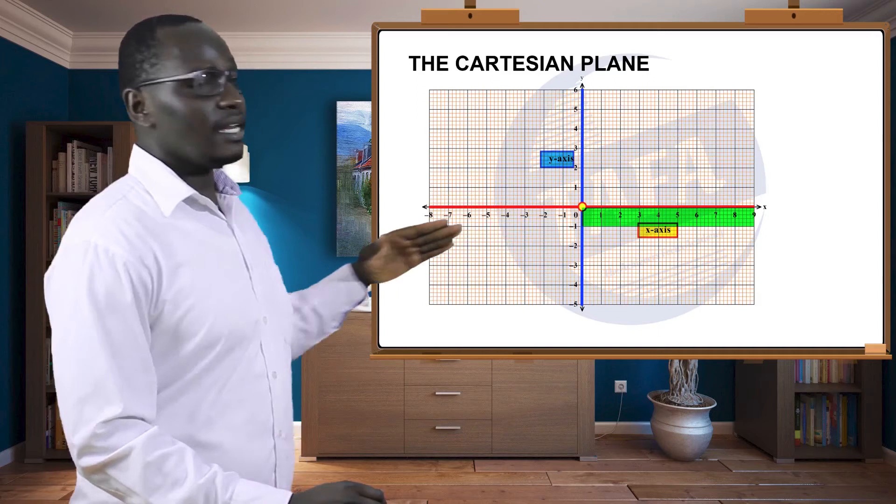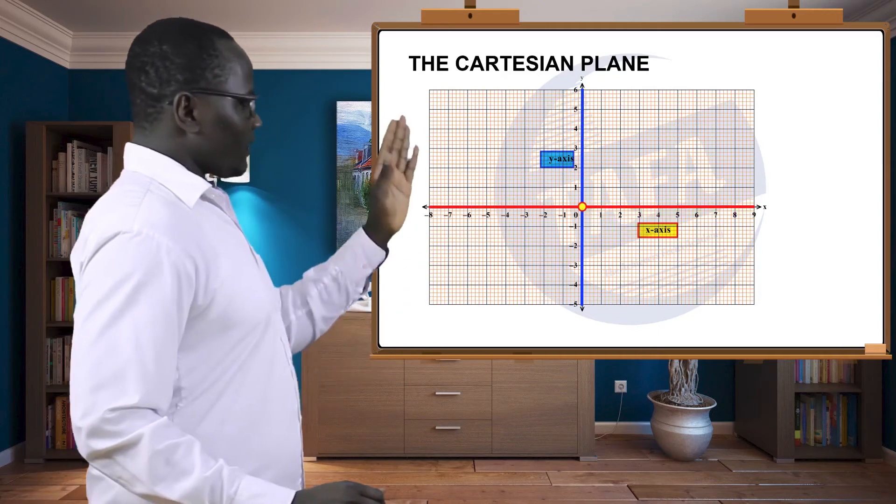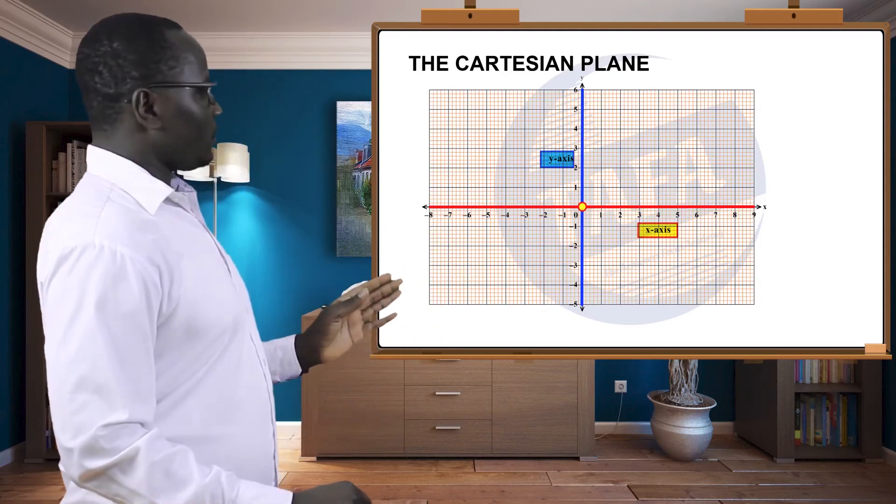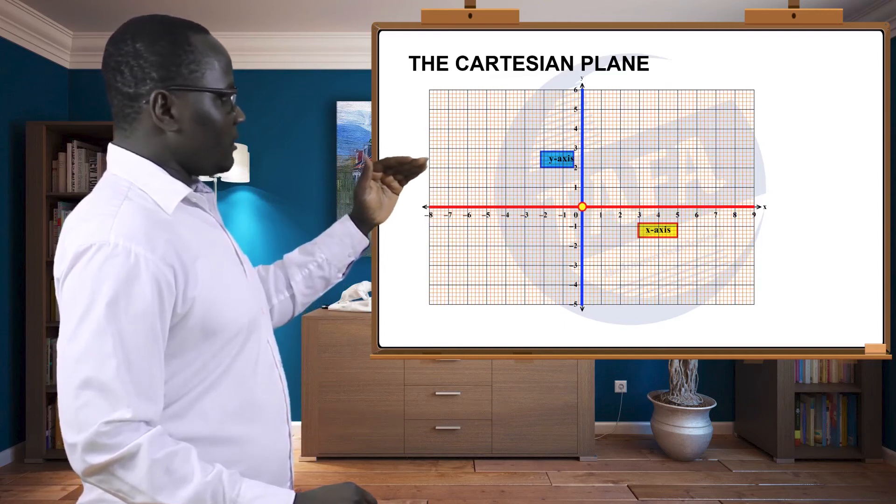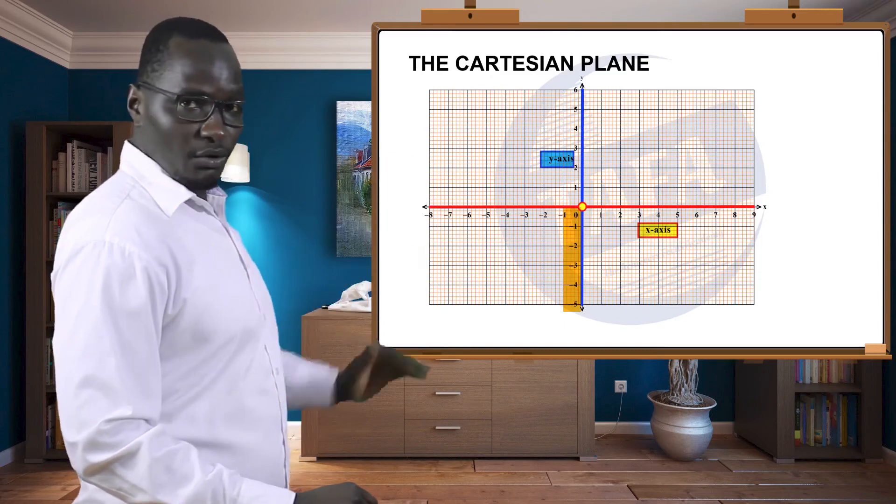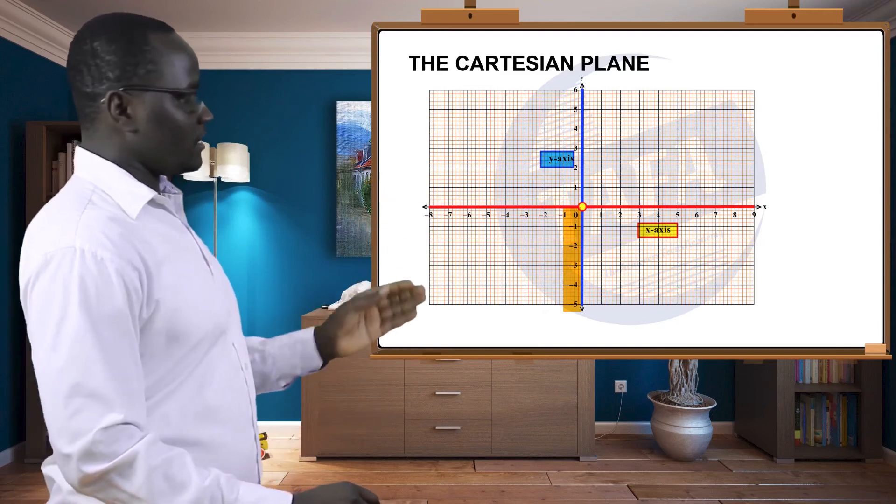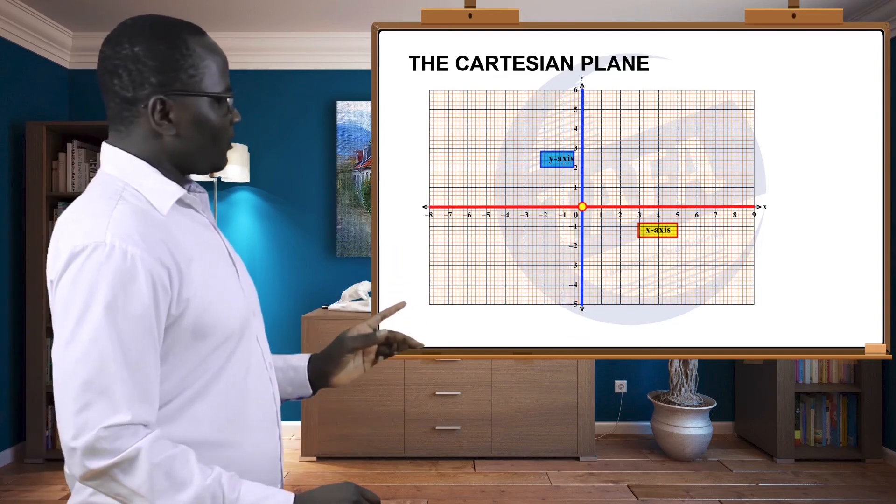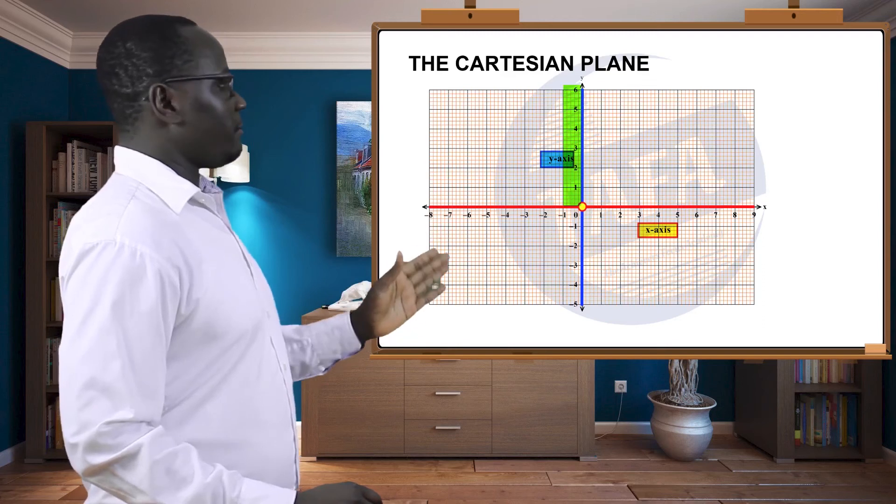The vertical line is the y-axis. Now the y-axis also, you can see points below zero, below O, are negative and they are becoming smaller and smaller, that is from negative one, negative two, and so on. Then also going up, the numbers are positive and they are increasing. You can see one, two, three, all the way.